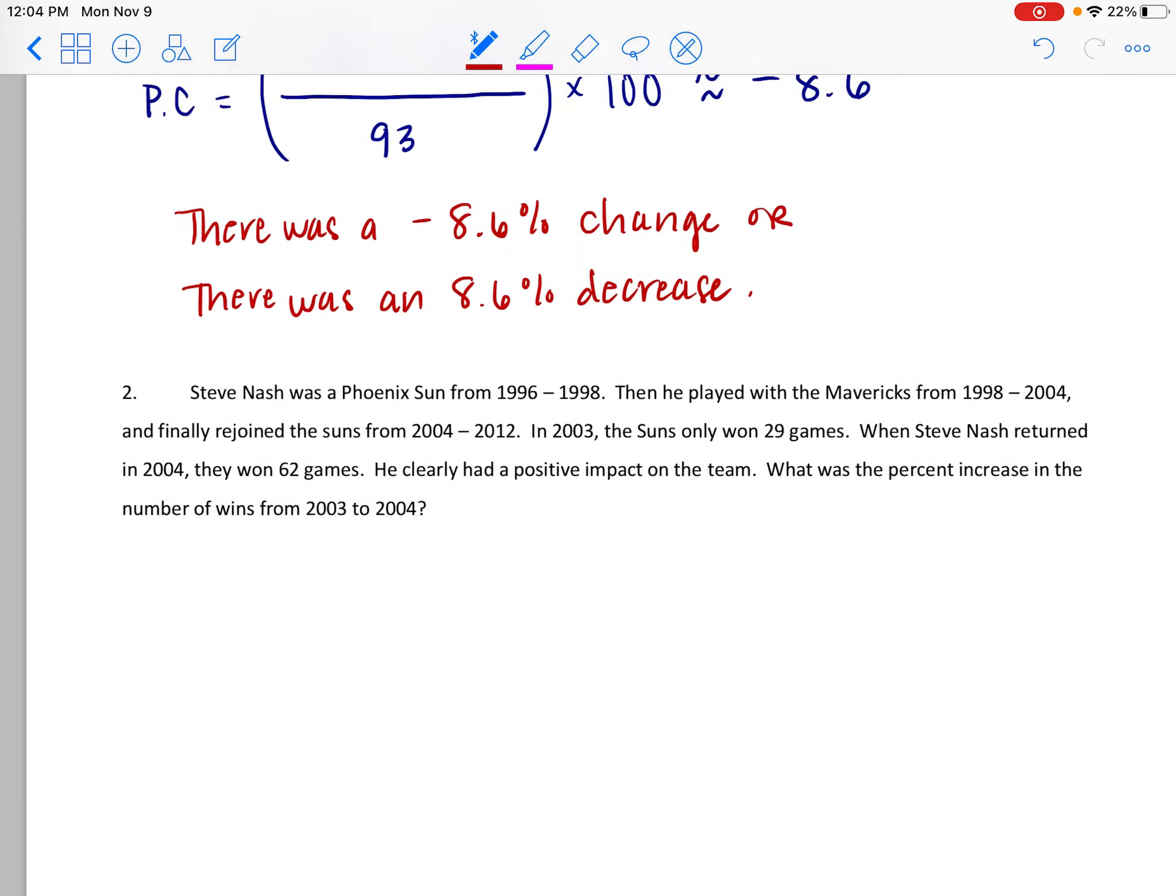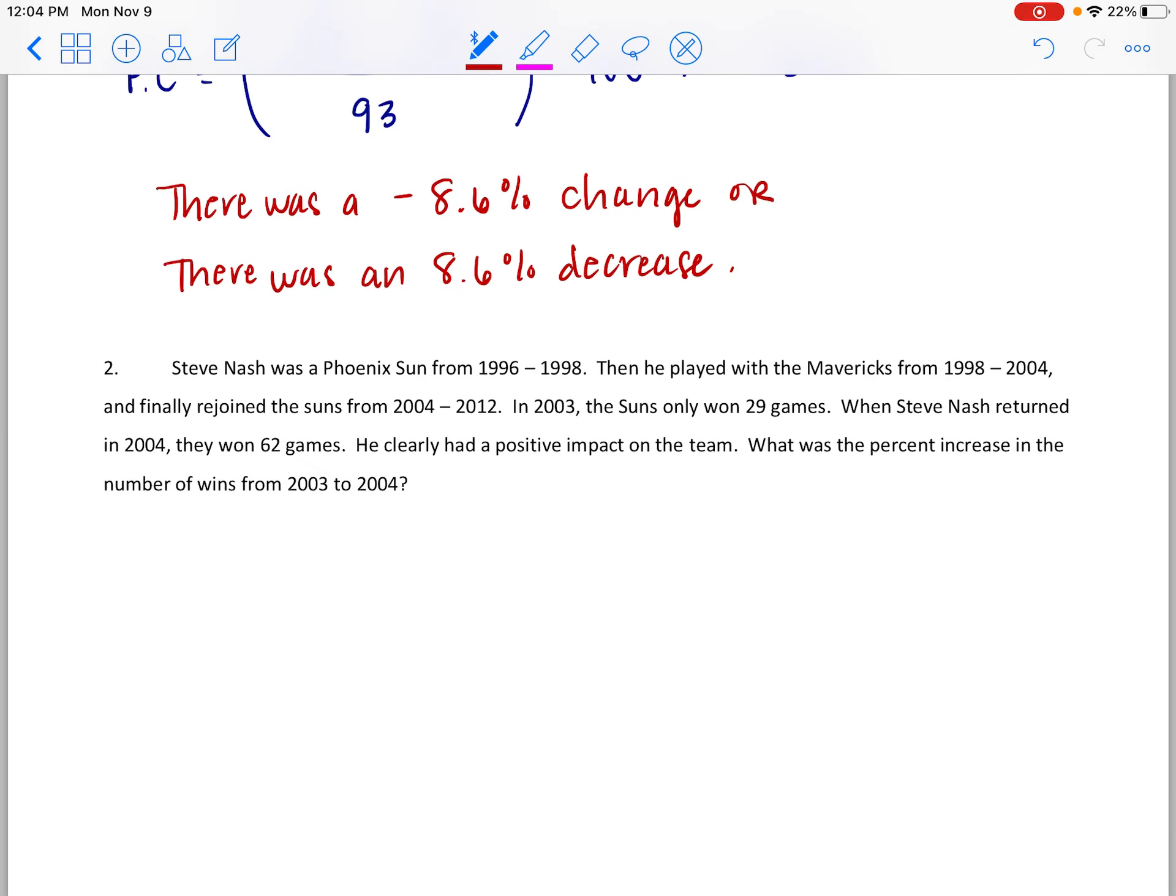So there's your Diamondbacks not doing so hot from 2018 to 2019. Although a few seasons before that they actually went to most improved team by gaining the most wins, but seasons ago, we want the current stuff, right? Steve Nash was a Phoenix Sun from 1996 to 1998, and then he moved to play with the Mavericks from 98 to 2004, and finally rejoined the Suns from 2004 to 2012.